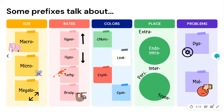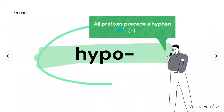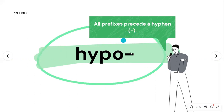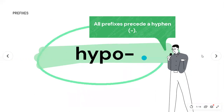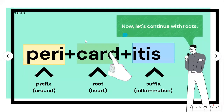Something else to know is that prefixes precede a hyphen. All prefixes go before the hyphen — for example, hypo-, hyper-, megalo-, chloro-, and all the prefixes we just mentioned.